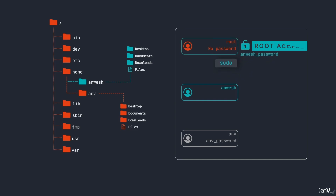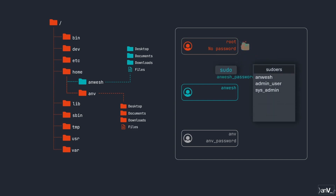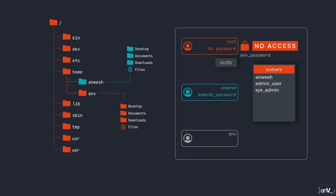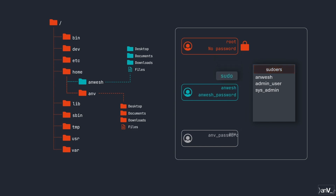This is where sudo comes in — short for 'super user do' or 'substitute user do'. Sudo allows a user to use their account's password to unlock root content. However, the user should be in the sudo users list. As the main user, your account is added by default, so to perform any root action we use the sudo command.